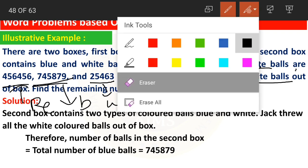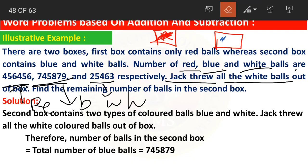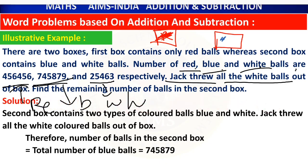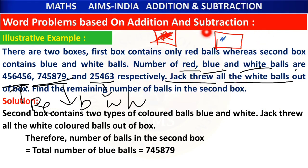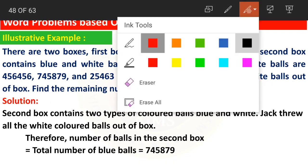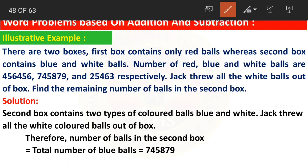In the second box we are left with only blue balls. The number of blue balls is 7 lakhs 45,879. Now where does addition and subtraction come in? The total number of balls in the second box is blue plus white: 7,45,879 plus 25,463. This total is the number of balls before any were thrown out.